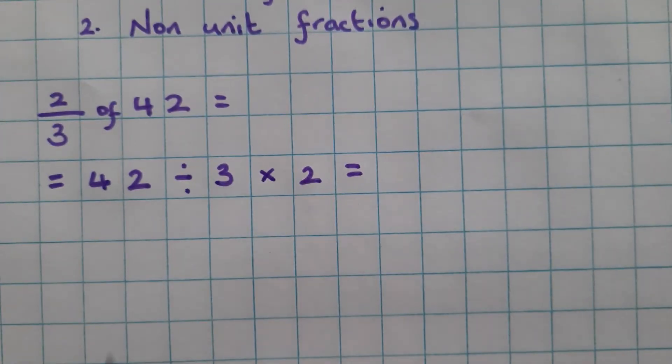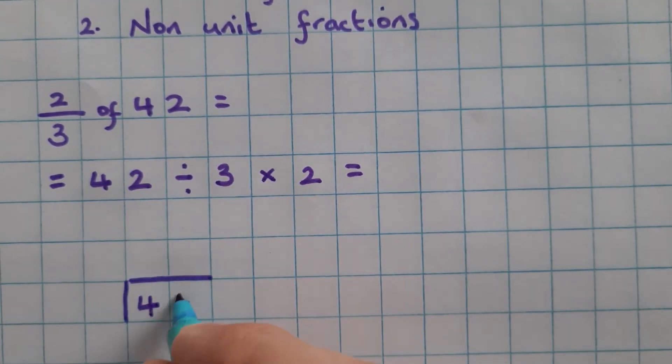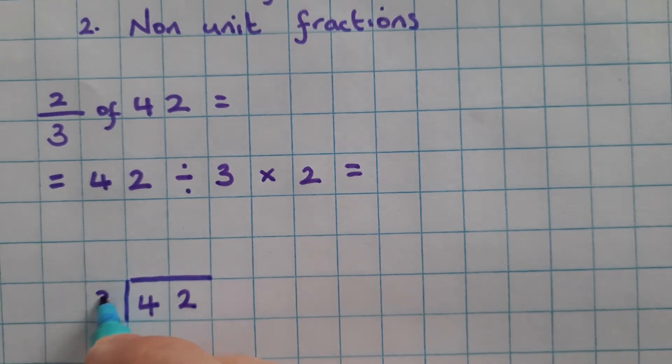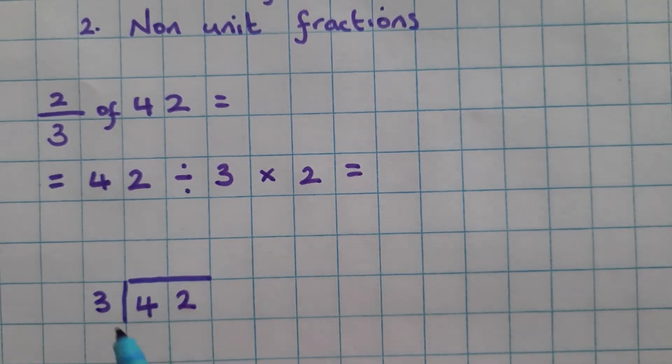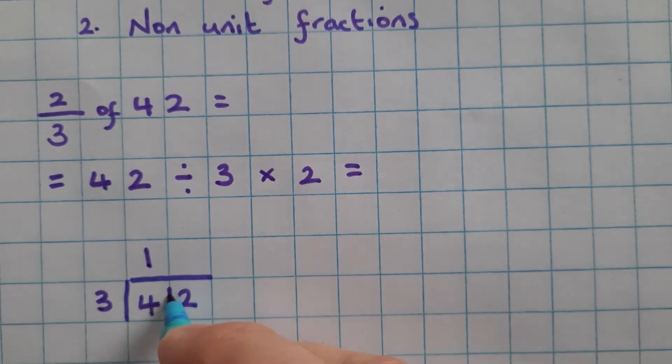So we'll start with the division element. 42 divided by 3 using our bus shelter method. How many 3's go into 4? What is 4 divided by 3? Well it's 1 with 1 left over.